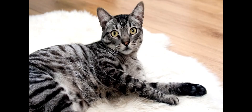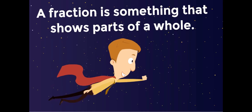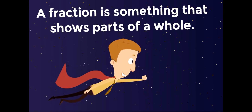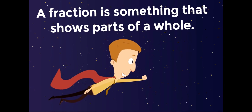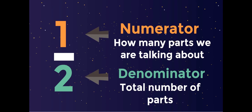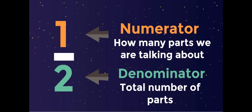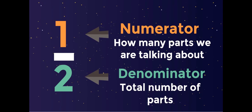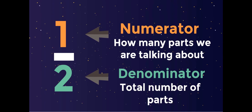Not even a fraction of my heart belongs to you, Mr. Whiskers — my whole heart! A fraction is something that shows parts of a whole. The top number of a fraction is the numerator — how many parts we are talking about. And the bottom number of a fraction is the denominator — the total number of parts.